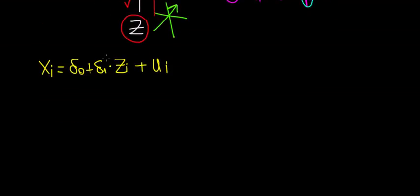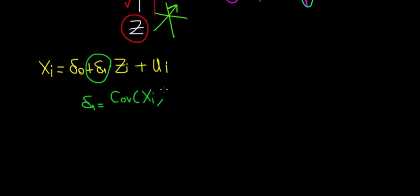What is the slope coefficient in this case? That's going to be δ₁. δ₁ is the ratio of the covariance between the dependent variable — which is x in this case — and the independent variable z, relative to the variance of z. If you're uncomfortable with this notation, have a look at the statistics playlist — there are videos deriving all the math of this.